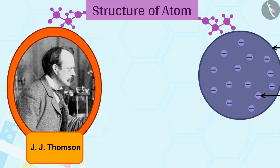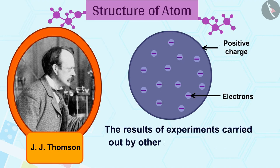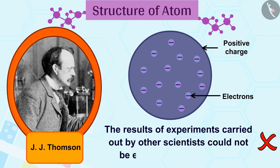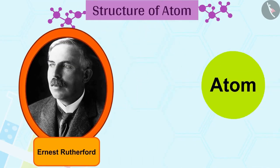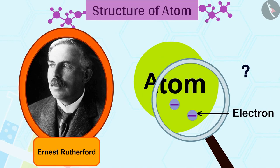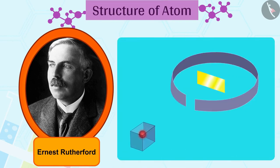Although Thomson's model explained that atoms are electrically neutral, the results of experiments carried out by other scientists could not be explained by this model. Ernest Rutherford was interested in knowing how the electrons are arranged within an atom, and he designed an experiment for this.